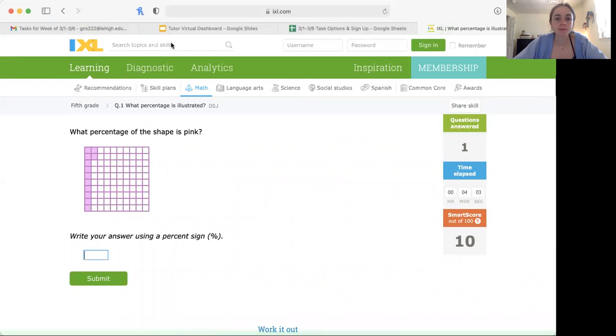So again, do this one. Pause the video. I'm going to go through it now. You have 10 plus 1, 2 and that equals 12. So only 12 of the 100 are shaded in. So then your answer would be 12%. Let's check our answer and that was correct.